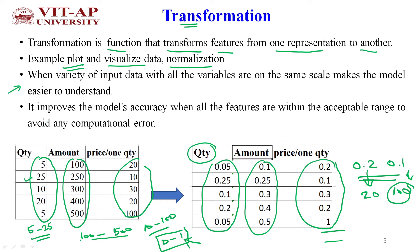When should we use this? When we have a variety of input data with different ranges for all features, bringing them onto the same scale makes the model easier to understand. If features have different ranges and we transform them to the same scale, the model gives better performance. When all features are within an acceptable range, it avoids computational errors and reduces computational resource usage.